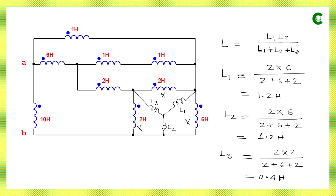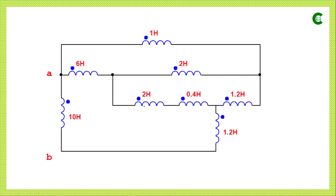When we simplify the two inductors connected in series, the equivalent inductor will be 2 Henry, since series inductors simply add. After modifying the circuit, instead of the delta connection we now have the star connection with the calculated values. Now we need to simplify further. The 2 Henry inductor and the 0.4 Henry inductor are connected in series, so their equivalent value is 2.4 Henry.